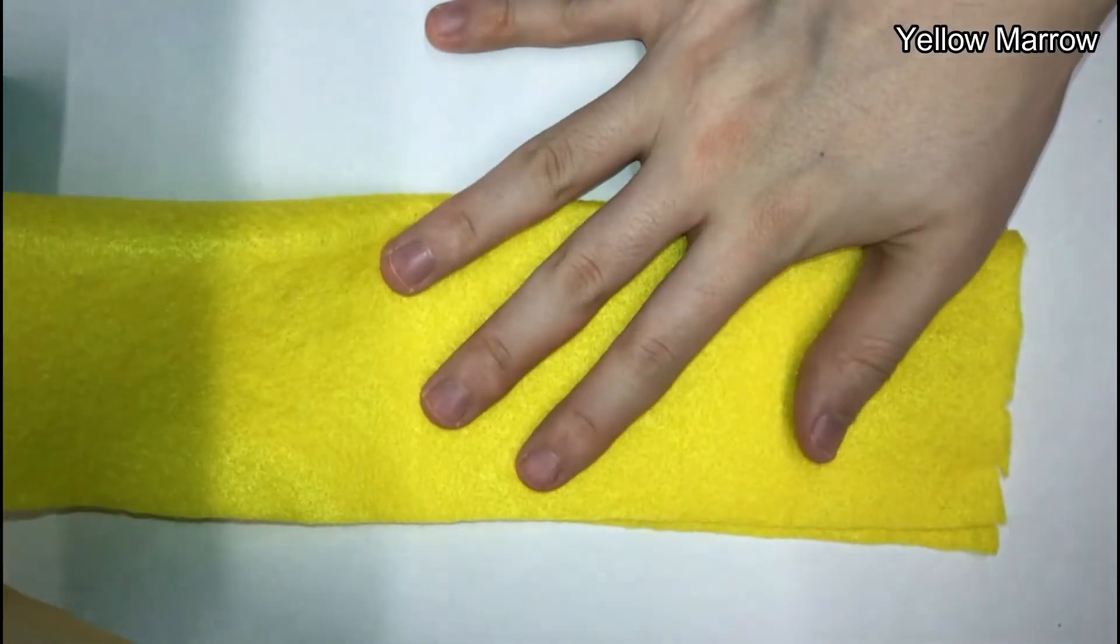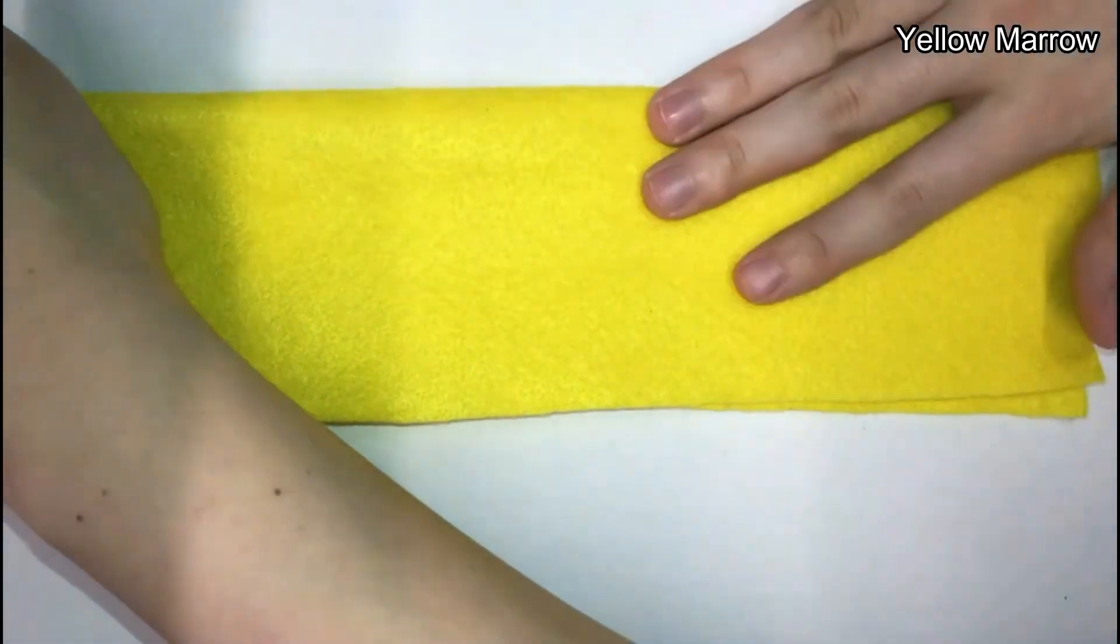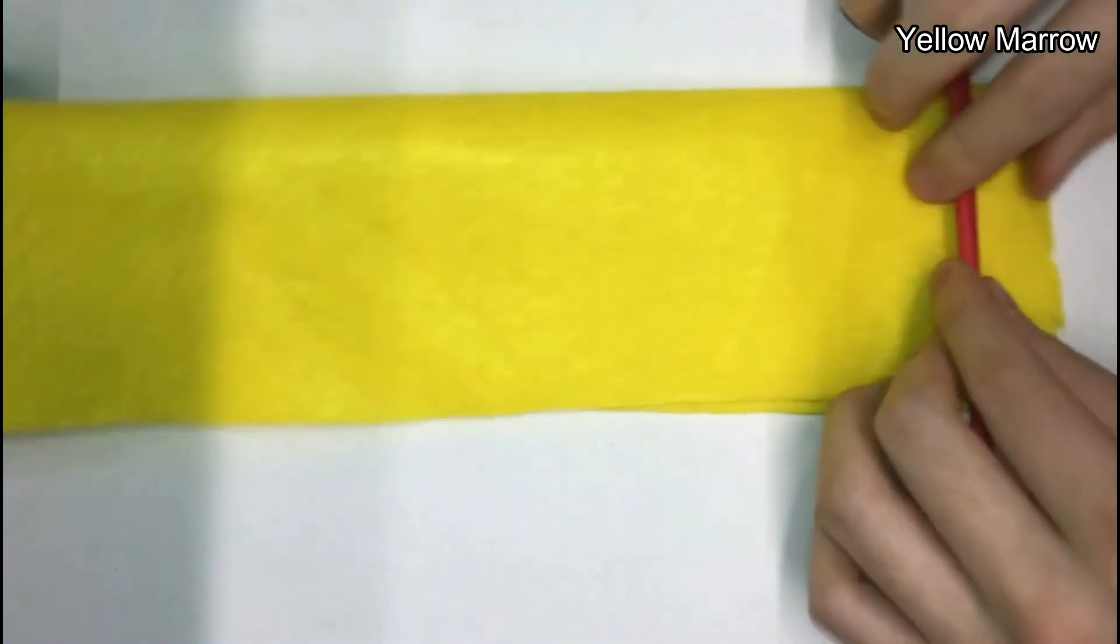Next wrap the straw in the yellow felt. The yellow felt will be the yellow marrow around the red marrow. In the yellow marrow, nutrients and fatty cells are stored.